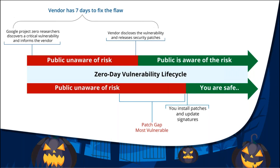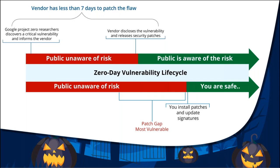For vulnerabilities considered critical, Project Zero allows only seven days for the vendor to patch the flaw. If the vulnerability is being actively exploited, Project Zero reduces the response time to less than seven days. In such cases, either the vendor or the security researcher might ask users to disable the vulnerable feature or follow other mitigation controls until a patch is rolled out. In rare cases, the vulnerability might be discovered by a software user and wind up on a blog or be publicly disclosed in a community.